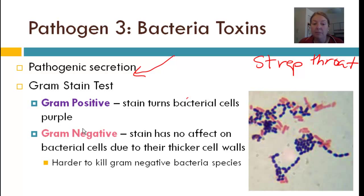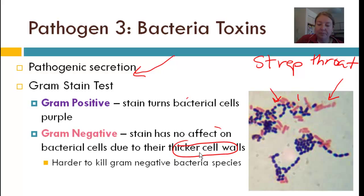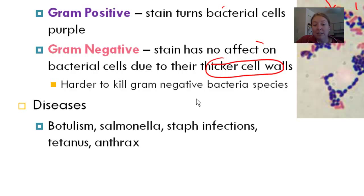If the bacteria from your throat turns purple — like the little cocci, the circular bacteria — that's usually the better result, not the dangerous one. However, if they turn pink like the rod-shaped bacilli, that means they have a really thick cell wall and it's tough for us to kill these bugs. Unfortunately, most of the bacterial infections we deal with are gram negative. Some common gram negative diseases include staph infections, strep infections, anthrax, and food poisoning such as salmonella.